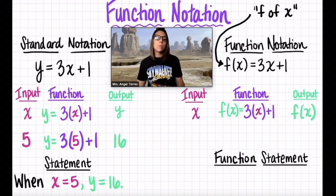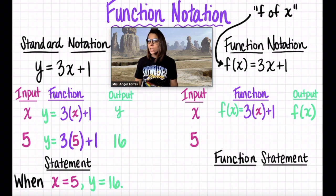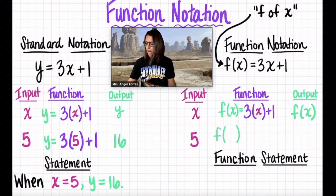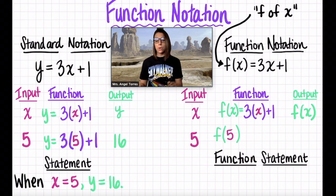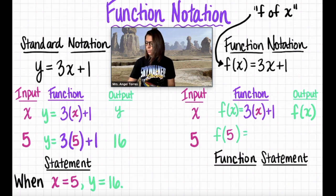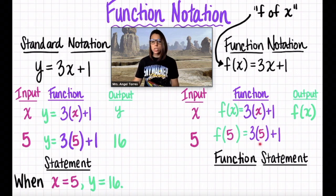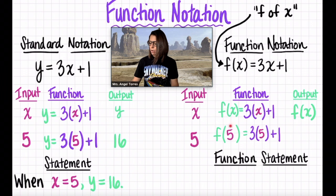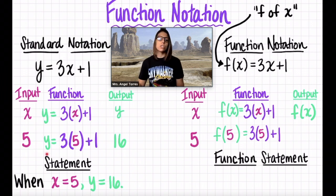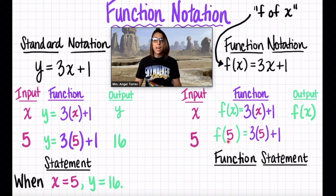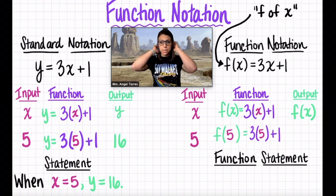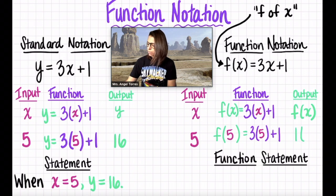Let me show you an example. Let's say we wanted to input the value of 5 again. We would say that f — our function name — of 5, because now we're essentially inputting 5, is equal to our function 3 times 5 plus 1. Let's compare and contrast these. We have the same function, 3 times 5 plus 1, but now we're showing that our output f of x is for the specific input 5, whereas in standard notation you're just showing y. This means our function f when x is 5.